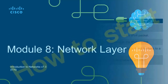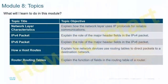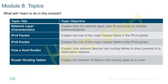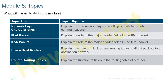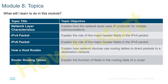What we're going to be doing in this layer is talking about IP packets and about routing. IP packets come in both IPv4 and IPv6. We're going to be talking about how the router makes decisions on path selection — that's essentially what routing is.